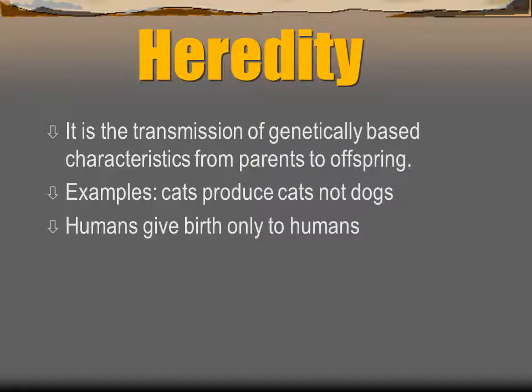First, we will start with the term heredity. What is heredity? It is the transmission of genetically based characteristics from parents to offspring. For example, human beings have features of their parents. Cats give birth to cats, not dogs, and humans give birth to humans. This passes from generation to generation.